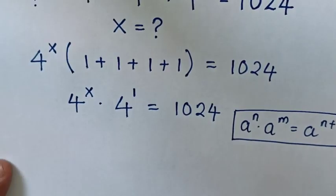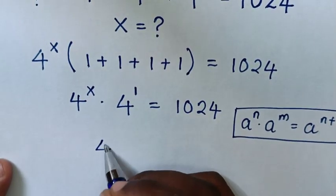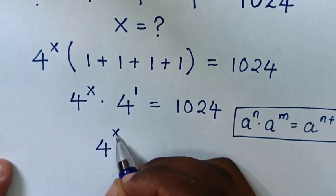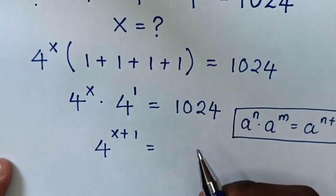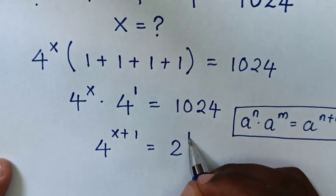Then in our equation, it will be 4 power x plus 1 is equal to 1024, same as 2 power 10.